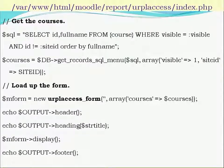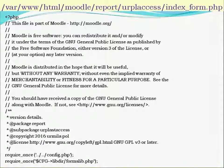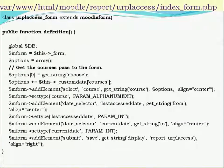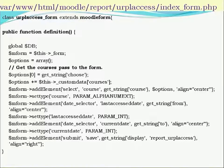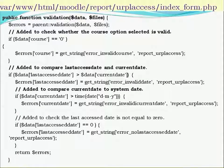In index_form.php, add elements are defined. Three fields are required: course, from date, and to date (date range). Using $mform->addElement('select', 'course', get_string('course'), $options, array('align' => 'center')), you add the course selector. Similarly, add the from and to date fields. Then load the form data, process the data, and display the report.